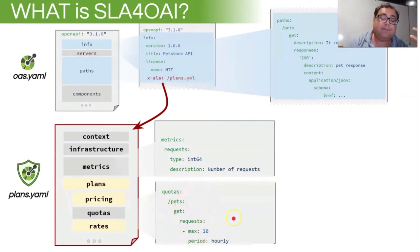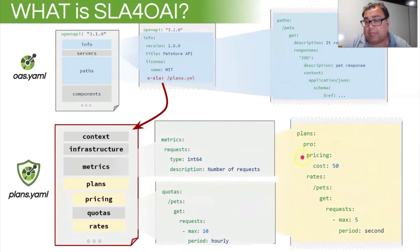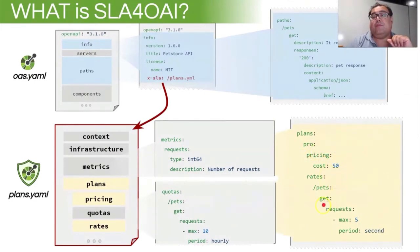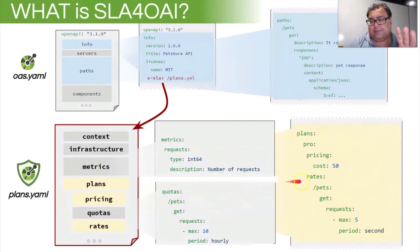As we can see, it's very simple to specify this kind of constraint. We can also have a pro plan example with specific pricing and a rate over the same GET operation on the pets path, specifying that you're allowed up to five requests per second. The difference between rates and quotas is the sliding window over which you monitor the actual metric.